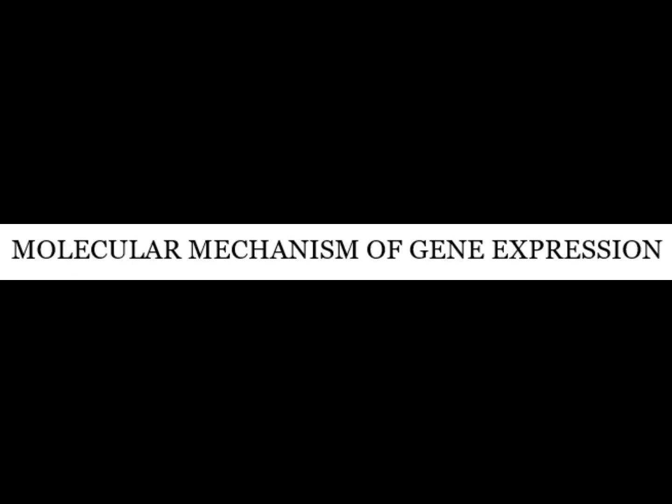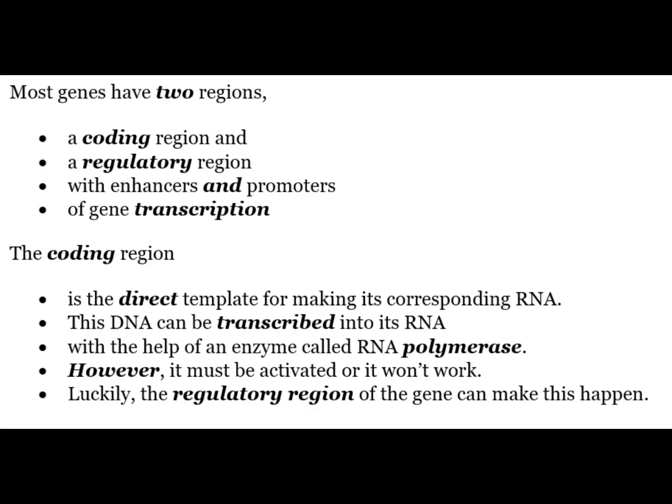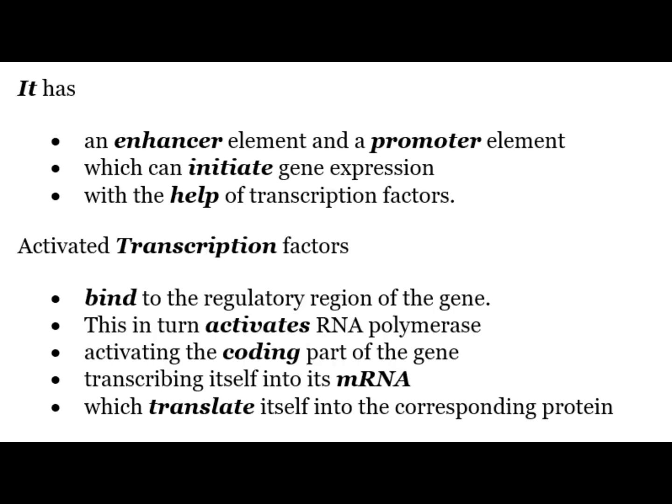Most genes have two regions: a coding region and a regulatory region with enhancers and promoters of gene transcription. The coding region is the direct template for making its corresponding RNA, which can be transcribed with the help of an enzyme called RNA polymerase. However, it must be activated or it won't work. The regulatory region of the gene can make this happen — it has an enhancer element and a promoter element which can initiate gene expression with the help of transcription factors.